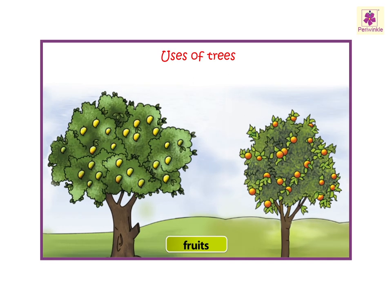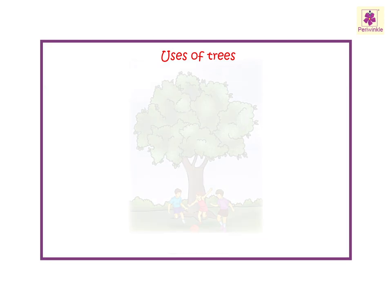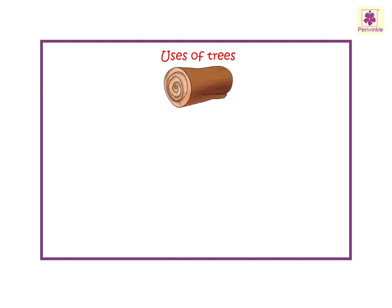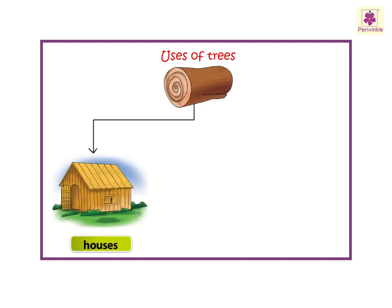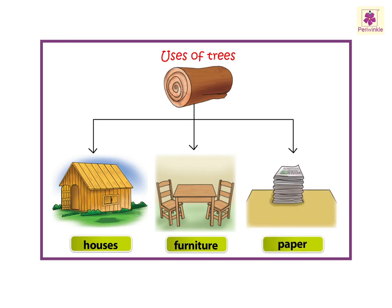Trees give us fruits. They also give us shade. Wood obtained from trees is used for making houses, furniture, and paper.